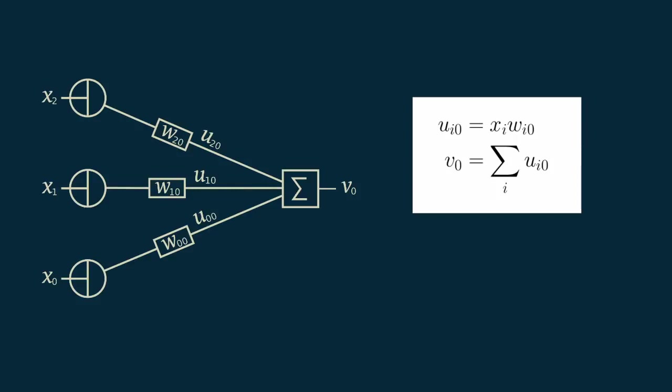Writing this out mathematically could get very tedious, so we'll use a shortcut. We'll substitute the subscript i for the index of the input. This allows us to write u sub i,0, where our u sub i equals x sub i times w sub i,0. And again, our output v sub 0 is just the summation over all values of i of u sub i,0.